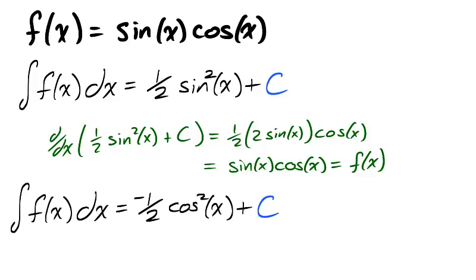In fact, another antiderivative of f is negative 1 half cosine squared of x. How can this be?